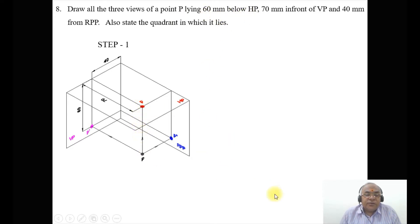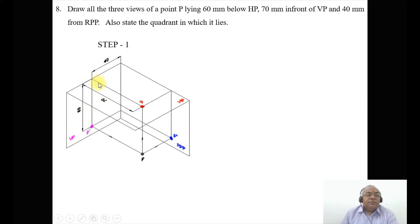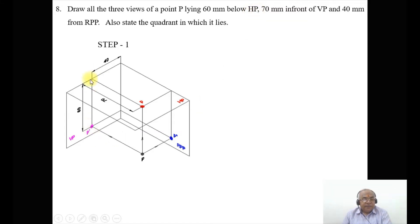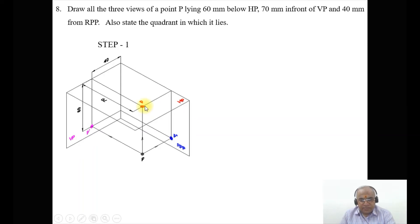In other words, if the distance is given with respect to HP, we need to take it in VP. Because when you look from the front view, since the front view is perpendicular to the vertical plane, the image will lie on the vertical plane. If you look from the front view, that image will not be on the horizontal plane, because the viewing direction is along the direction of that plane, so you will not be able to see the image there.